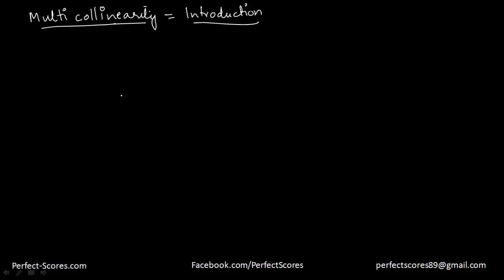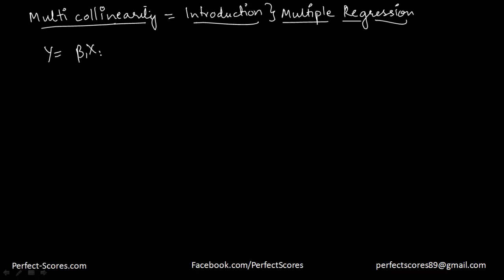So multicollinearity is actually one of the problems that arise in our regression model. I suppose you have watched the video on the multiple regression model, in which we showed how to estimate the population parameters and how to estimate the different variables in an equation. I am going to start with a very basic model: y is equal to beta 1 x1 plus beta 2 x2, with an error term. This is my multiple regression model, and one of the problems usually faced is by the name of multicollinearity.